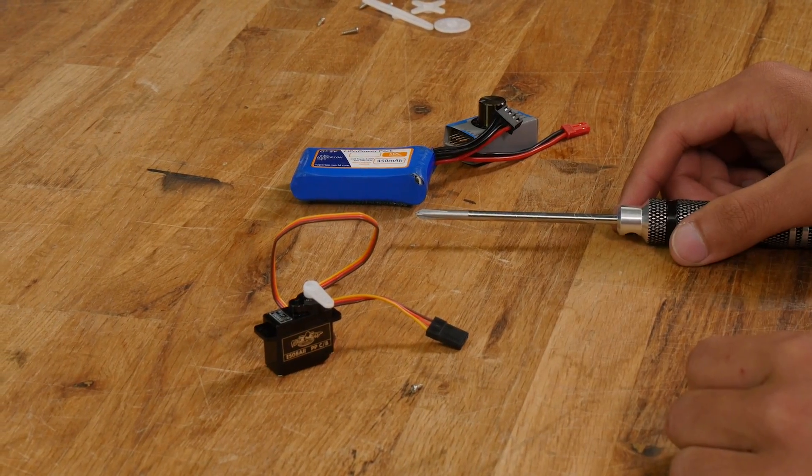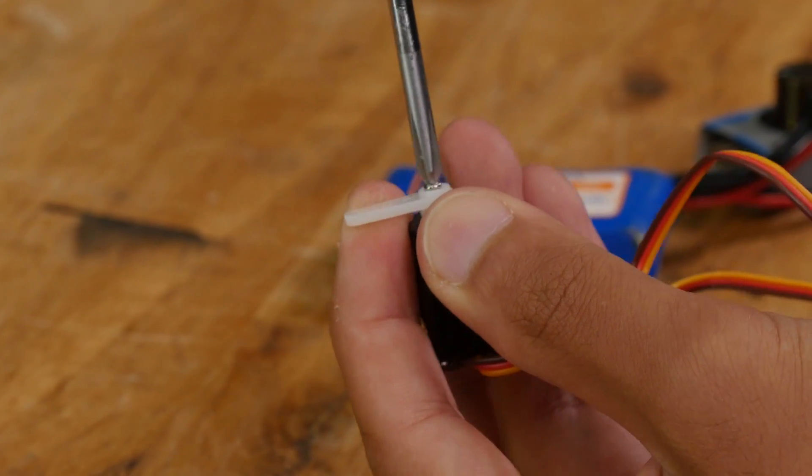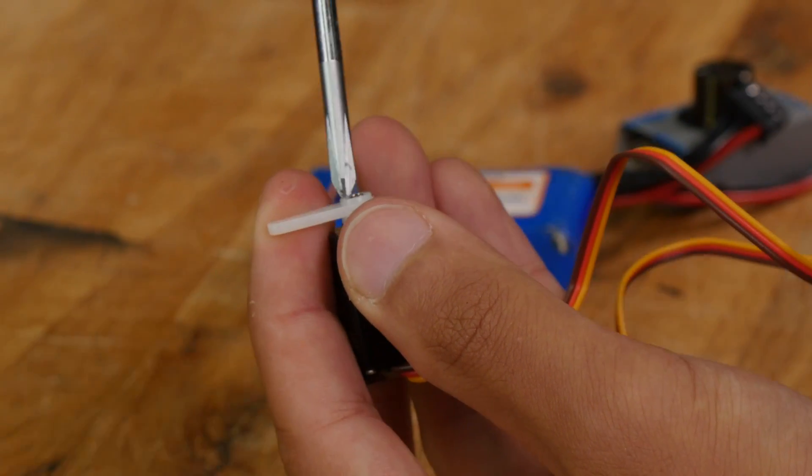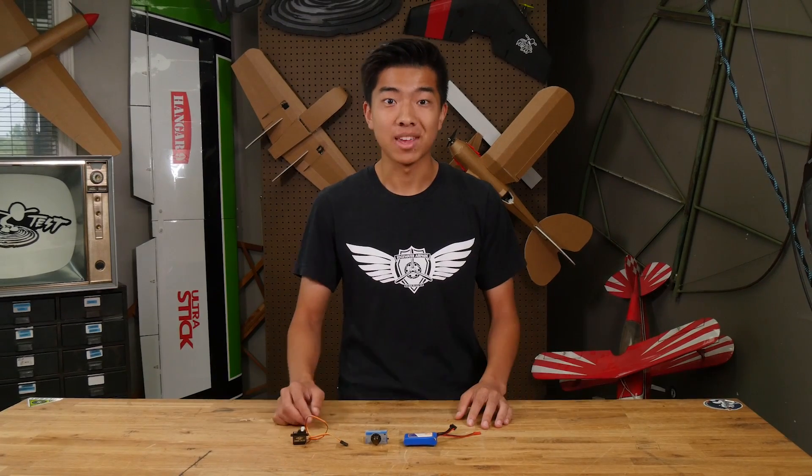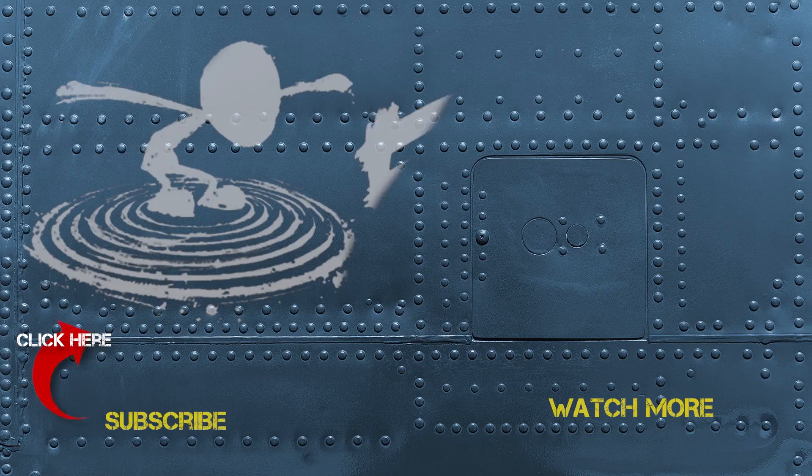Now we can unplug our servo from the servo tester and screw in our servo arm. As you're doing this, support the servo arm with your finger so that it doesn't rotate. And that's all there is to centering your servos. Happy building. See you next time on Flite Test.